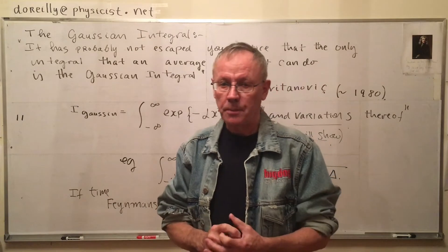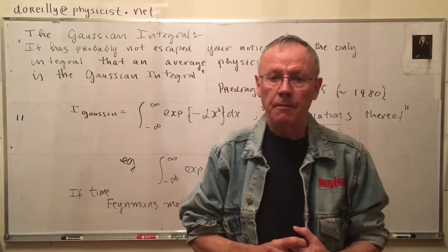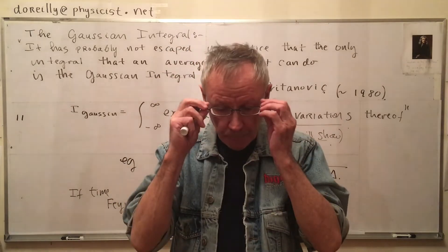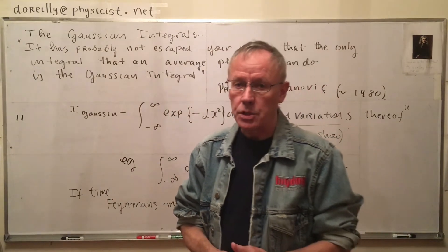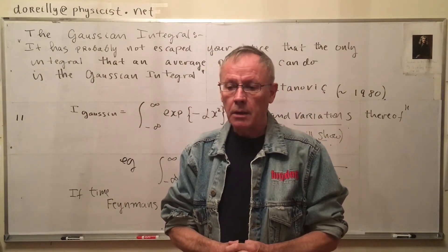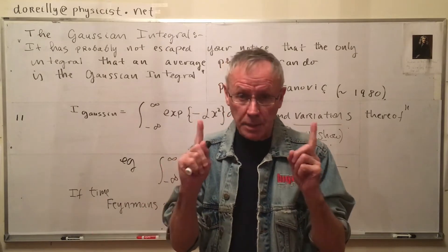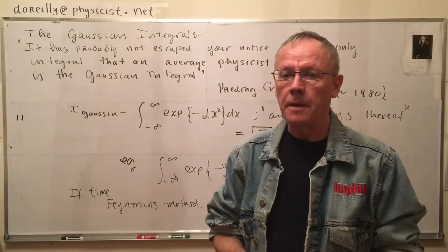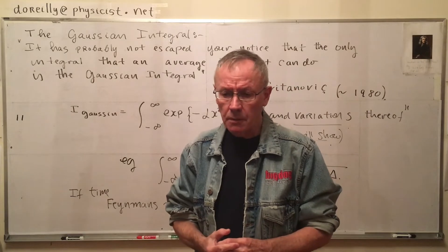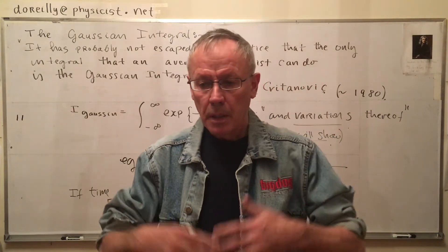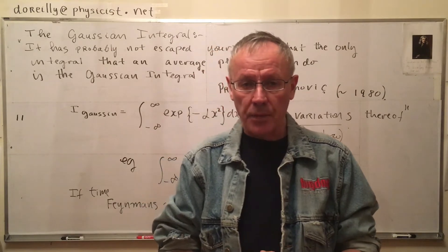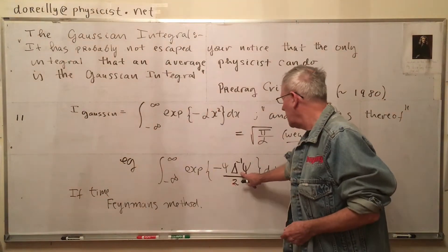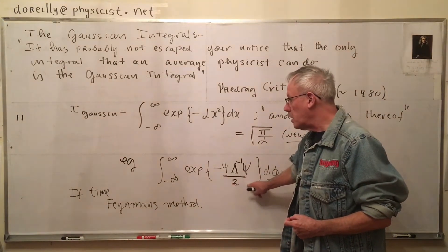The Gaussian integral is your average physicist's integral, but it's an integral that every physicist has to be able to do. There are many things that crop up in the form of a Gaussian distribution — it comes up in statistical mechanics, optics, and many other things. But it's also part of quantum field theory in a huge way, in the form of the path integral. To get to perturbation theory from the path integral, you have to be able to evaluate a Gaussian integral using a differential operator.